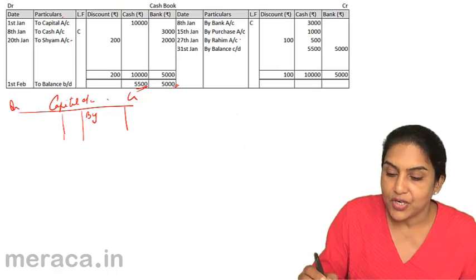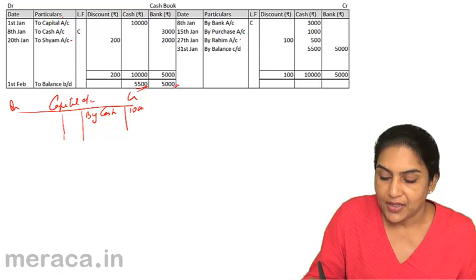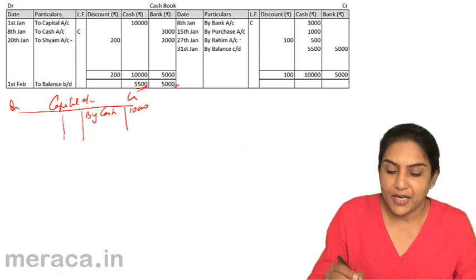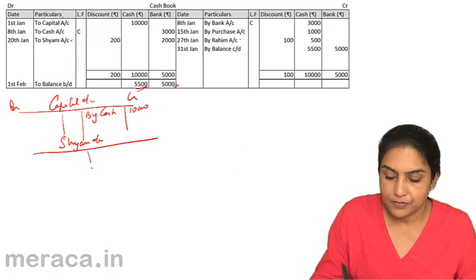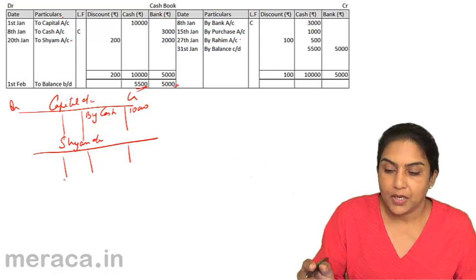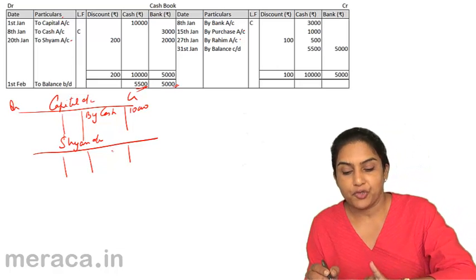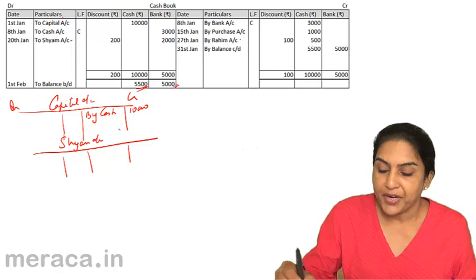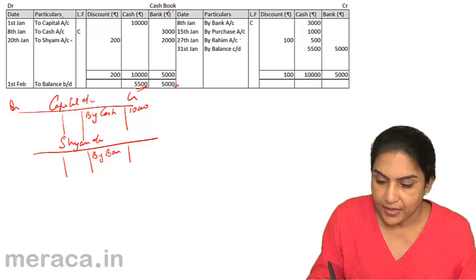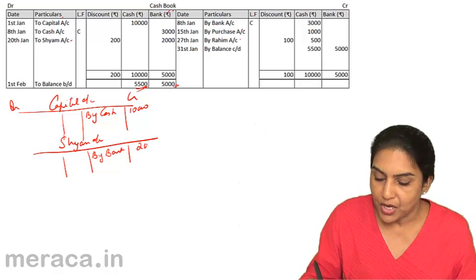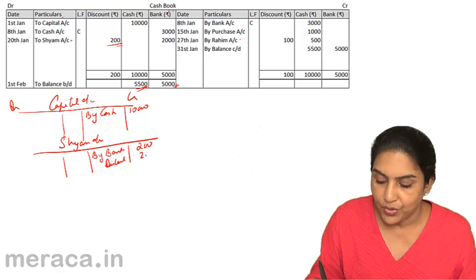For example, when we come to the cash book and see capital, we go to the ledger, open the capital account, and on the credit side of capital we write 'By Cash, 10,000.' Similarly, for Shyam's account — cash account has been debited, therefore Shyam's account will be credited. Since this is on account of bank, we write 'By Bank, 2,000,' and there is another effect: 'By Discount, 200.'